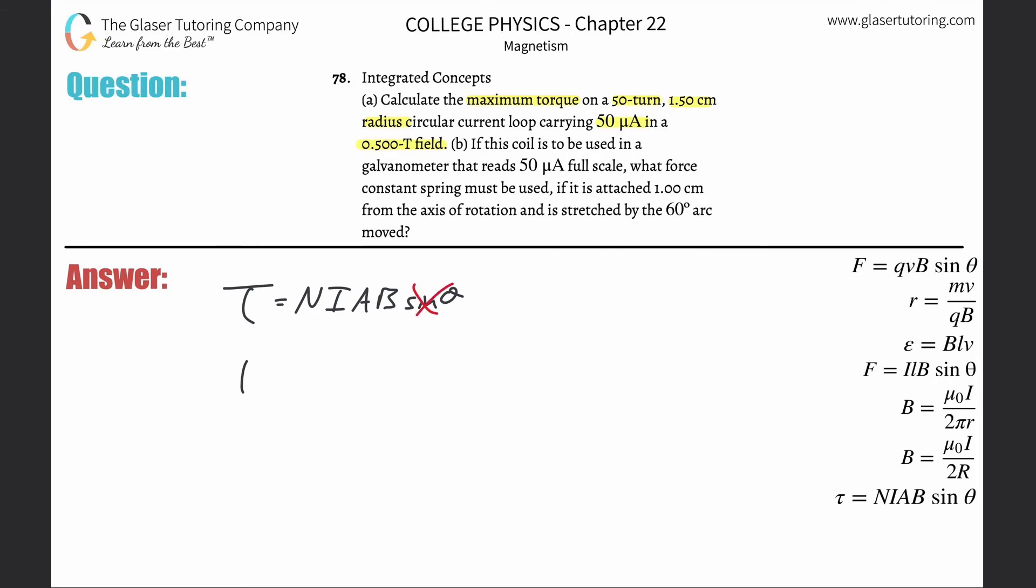The torque is then the number of turns, 50, times the current, 50 microamps or 50×10^-6 amps, times the cross-sectional area. The radius is 1.5 centimeters, but we need that in meters, so 0.015 meters. That's π times the radius 0.015 squared.